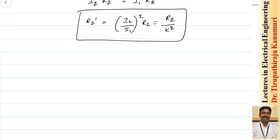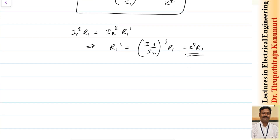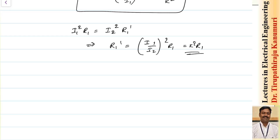Now let us find the equivalent resistance when primary resistance R1 is referred to the secondary side. The copper loss is I1²R1. When referred to the secondary side with current I2, the referred resistance R1' satisfies I2²R1' = I1²R1, giving R1' = (I1/I2)² × R1 = k²R1. So: referring primary resistance to secondary multiplies by k², while referring secondary resistance to primary divides by k².